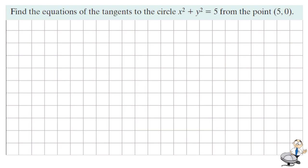Find the equations of the tangents to the circle x squared plus y squared equals five from the point five zero.